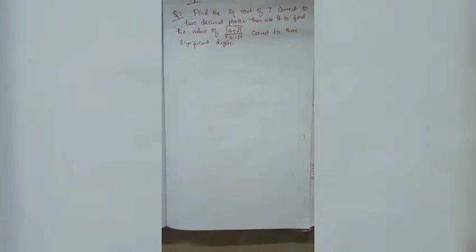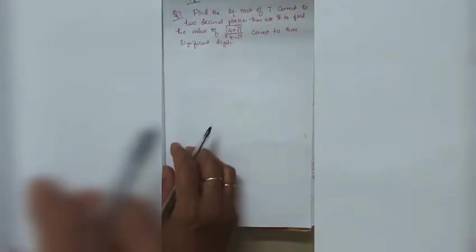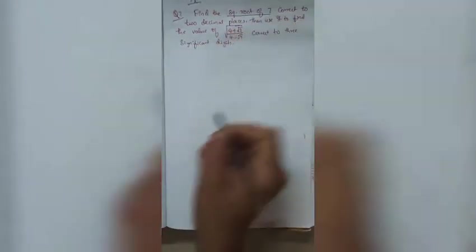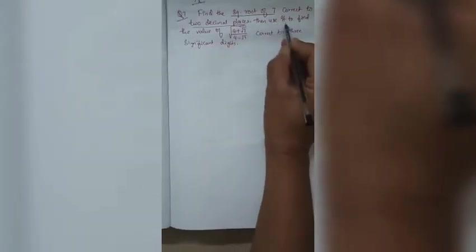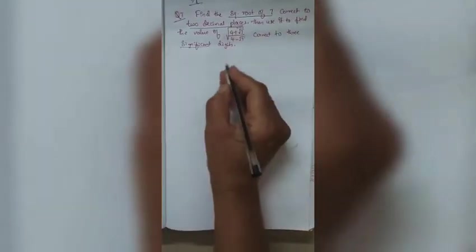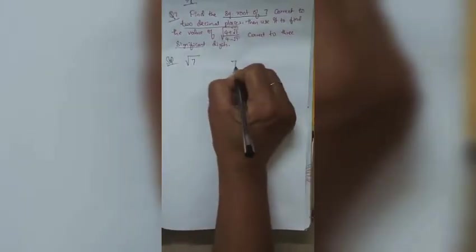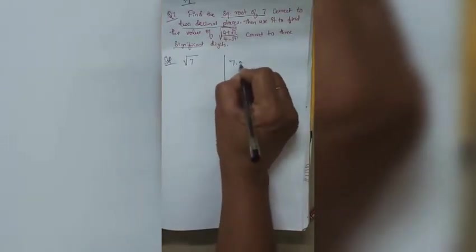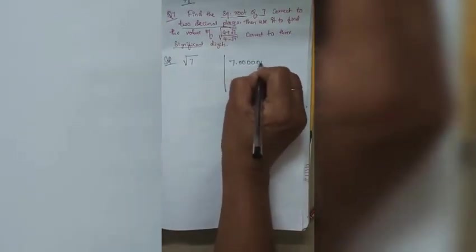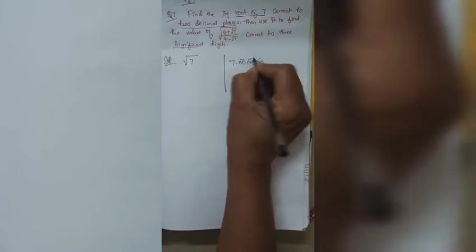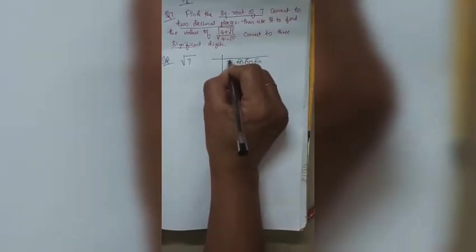Question 7: Find the square root of 7 correct to two decimal places, then use it to find the value of a given expression correct to three significant digits. We set up the long division: write 7.000000, placing as many zeros as needed.